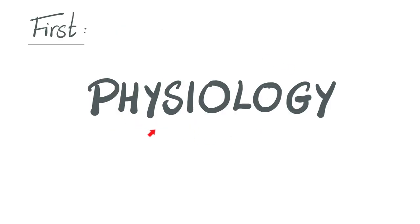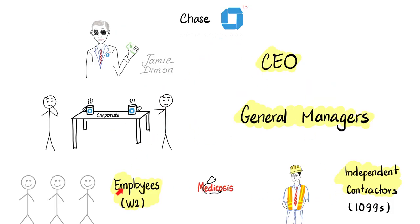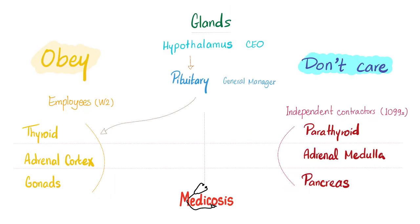First, a quick review on the physiology. Your endocrine system has a hierarchy like this, where you have a CEO, followed by a general manager, followed by employees on one hand and independent contractors on the other hand. The employees have to listen to the general manager, whereas the independent contractors could not care less about the general manager. Who is the CEO of your endocrine system? It is the famous hypothalamus of the brain. The general manager is the pituitary gland.